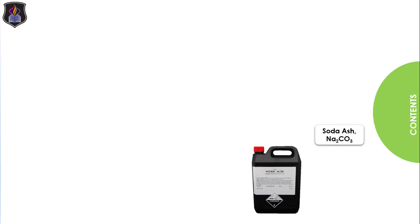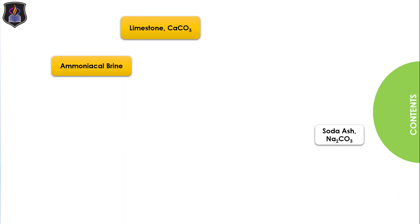Commercially, it is manufactured in the Solvay tower by using limestone and ammoniacal brine as the raw materials. Ammoniacal brine is a mixture of ammonia dissolved in 28% concentrated sodium chloride solution called brine.